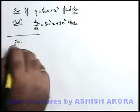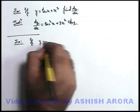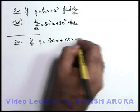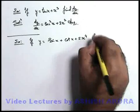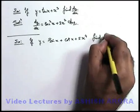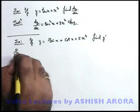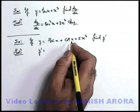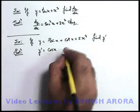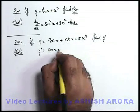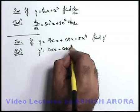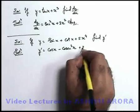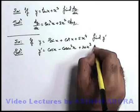Another example: say we are given with y = sin x + cot x + 5x⁴, and again we are required to find y prime. Here y prime can directly be written using the direct differentiation formulas. For sin x it is cos x. For cot x it is minus cosec squared x. And for 5x⁴ it will become 20x³. This is the answer.